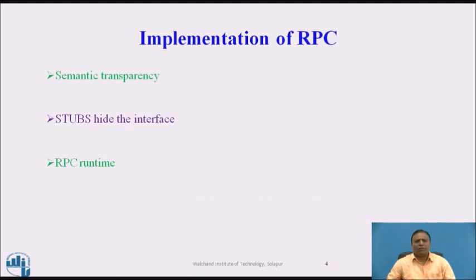Implementation of RPC: To achieve semantic transparency, the concept of a stub is used in the implementation of RPC. The stub hides the interface of the underlying RPC system from both client and server processes. To hide the details of the underlying network, an RPC communication package known as RPC runtime is used on both the client and server side.